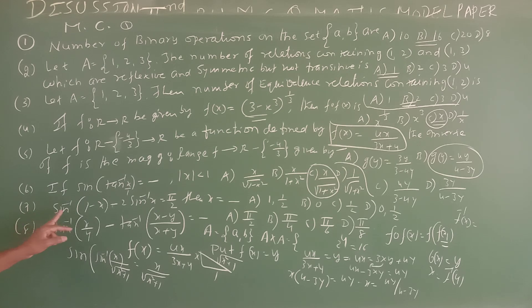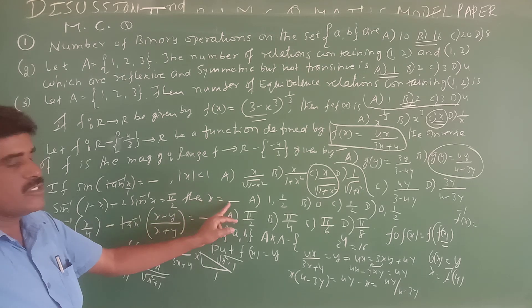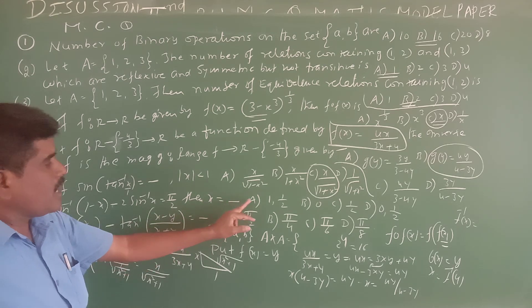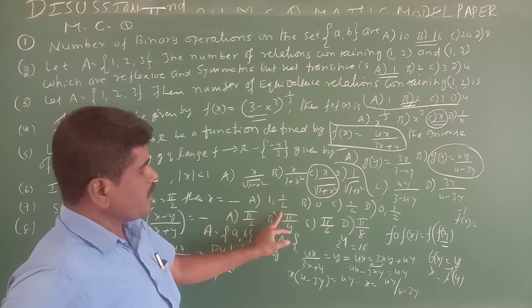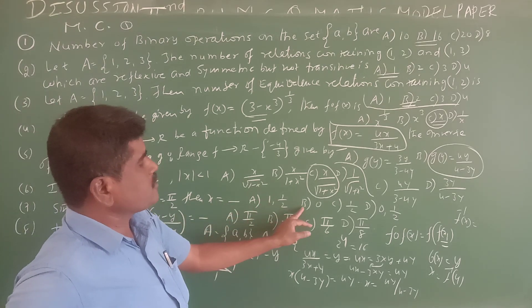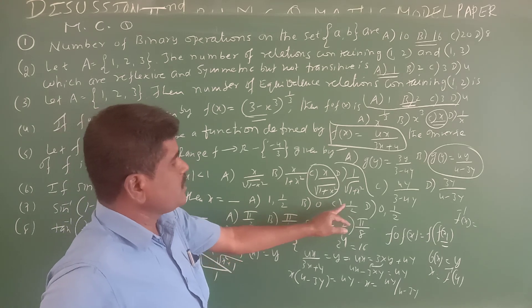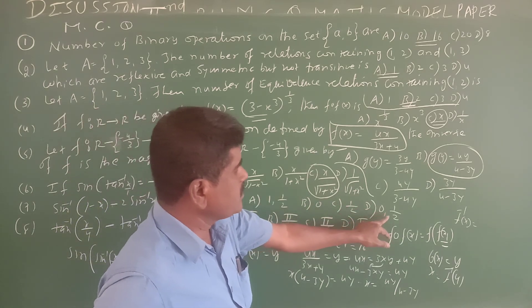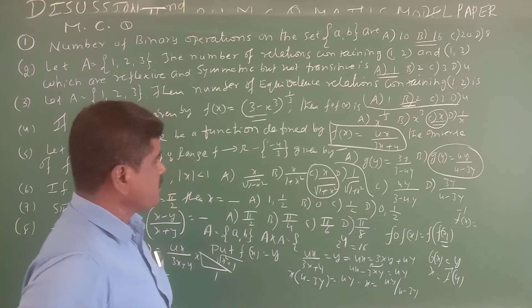Seventh one: sin⁻¹(1-x) - 2sin⁻¹x = π/2. Find x. Options: A: (1, 1/2), B: 0, C: 1/2, D: (0, 1/2).